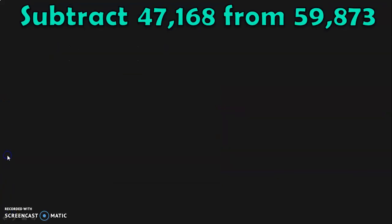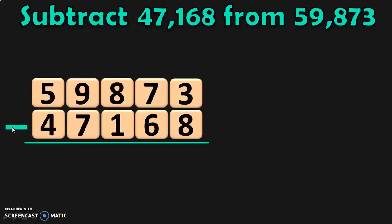Let us begin with the first sum. Subtract 47,168 from 59,873. First, write down the numbers one below the other and write down the place values. Begin the subtraction from the ones place. Here in the ones place, we have 3 minus 8. We know that 8 is greater than 3, so we cannot subtract it directly. So, we are going to use the borrowing or the regrouping concept.